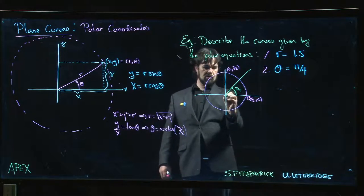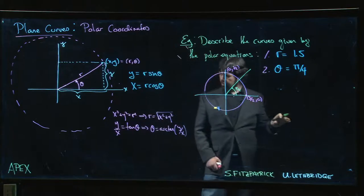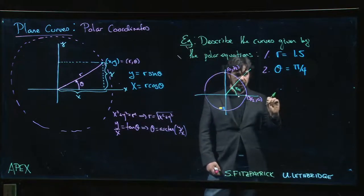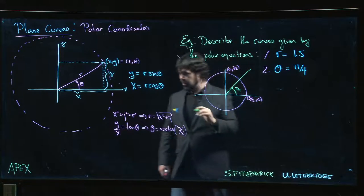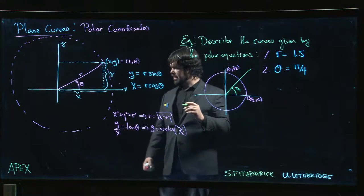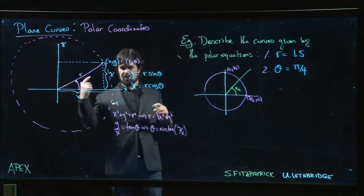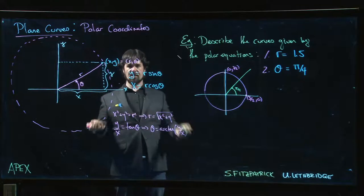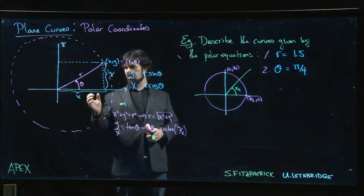So typically when we would draw the angle π/4, we draw the ray emanating out from the origin. The origin, by the way, is kind of a funny point. The origin is R = 0, and there is no well-defined value of theta for the origin.